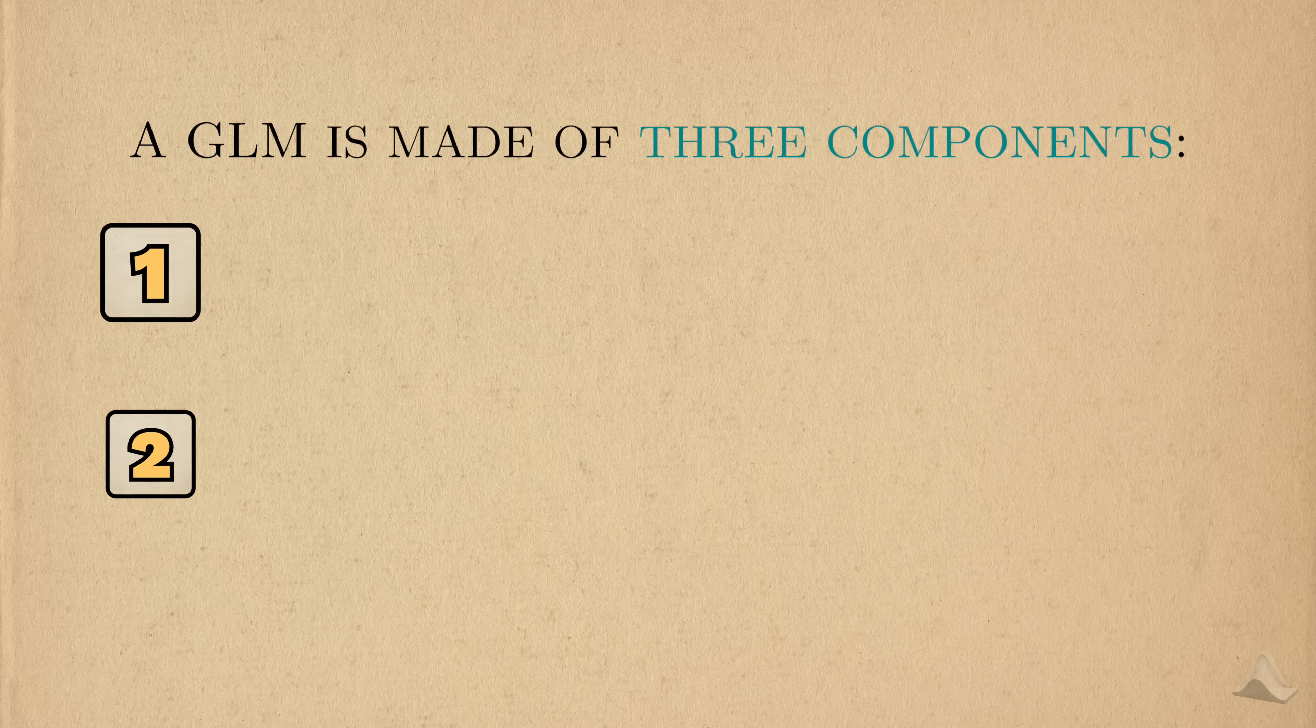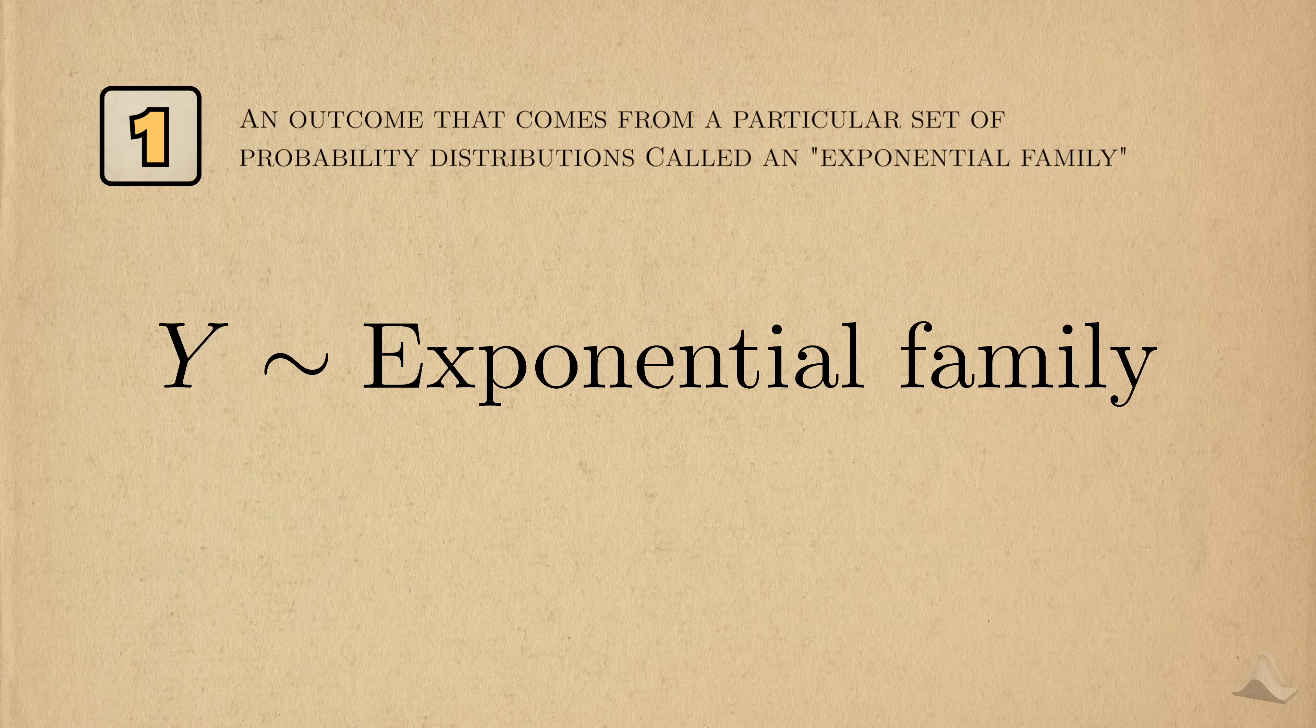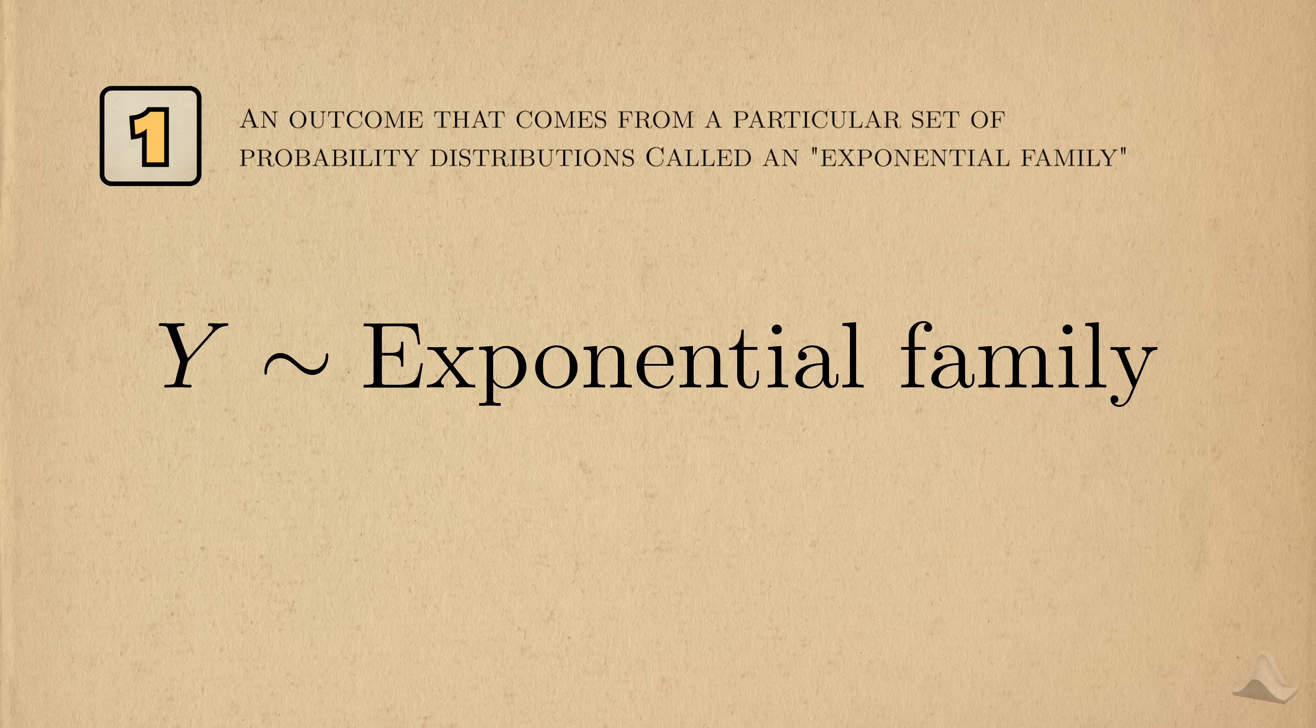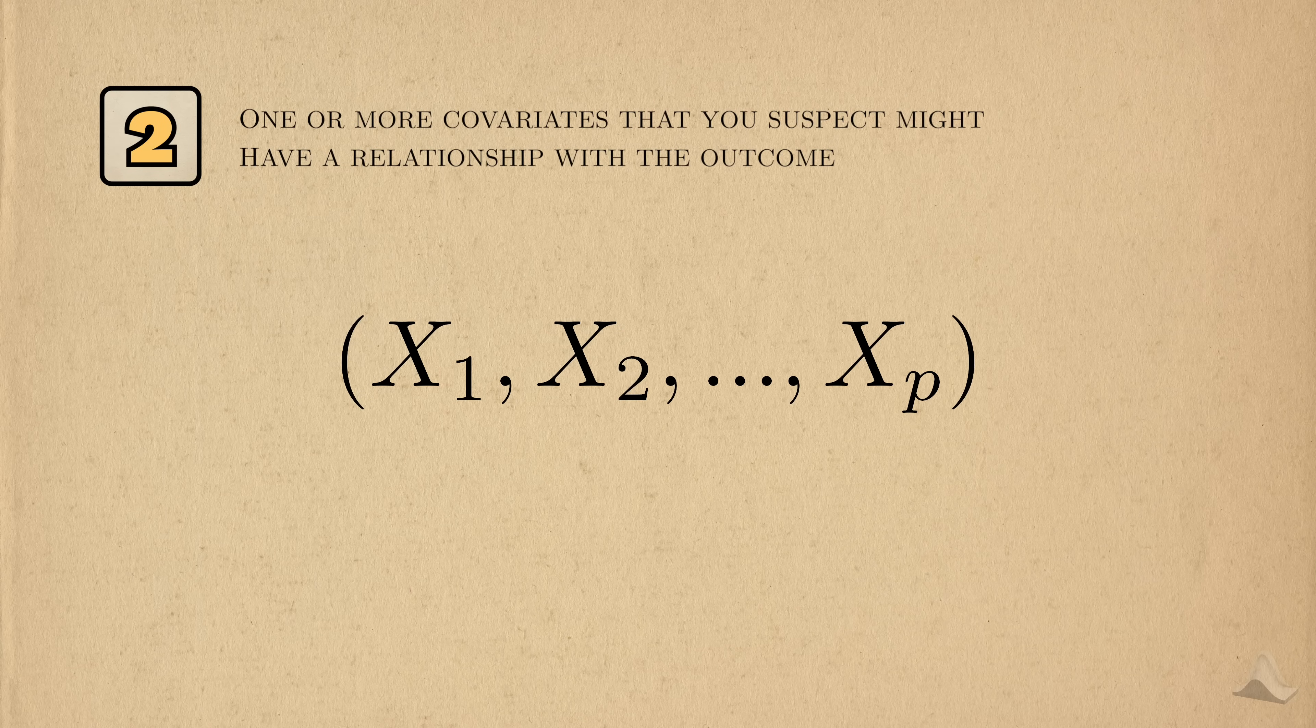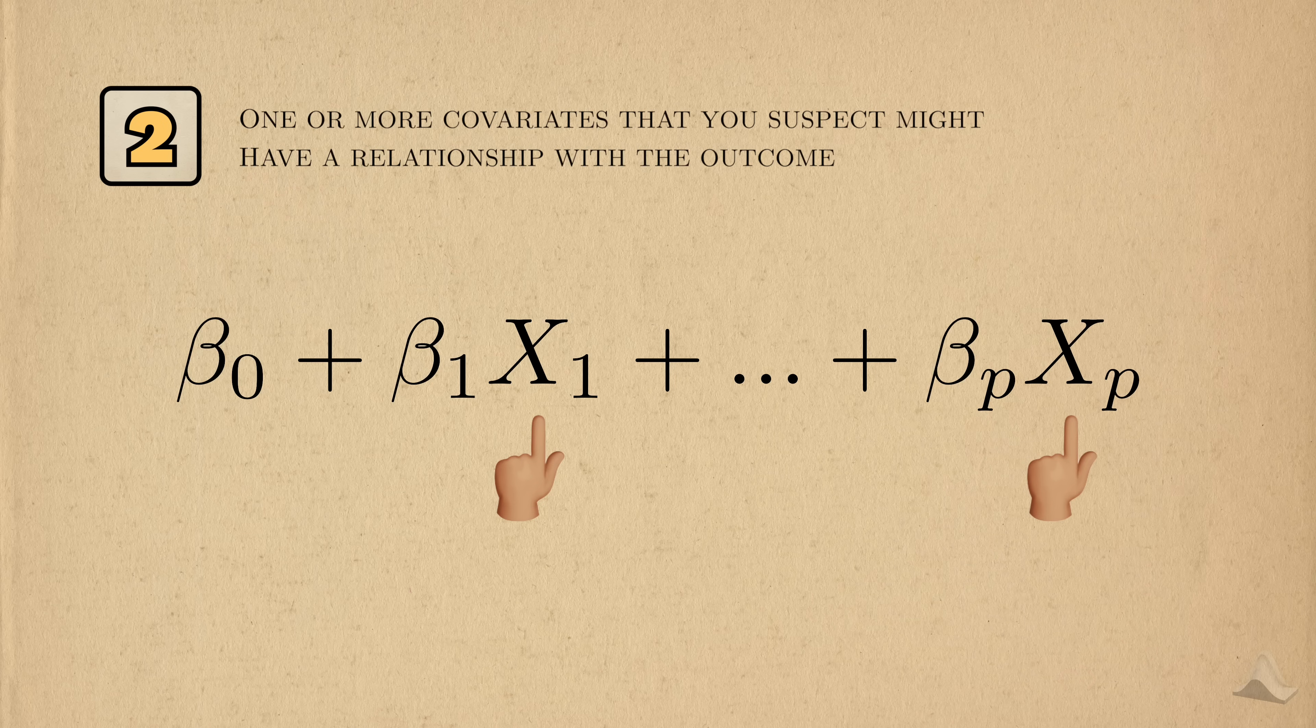A GLM is made of three components. First, an outcome that is assumed to come from a special set of probability distributions called an exponential family. We'll get back to this in a bit. You can call the outcome the random component. Second, one or more covariates that might have a relationship with the outcome. Instead of considering each covariate separately, we combine them into a linear model. This model allows us to separate the effects of each covariate while combining them all into a single convenient value. This linear model is called the systematic component.